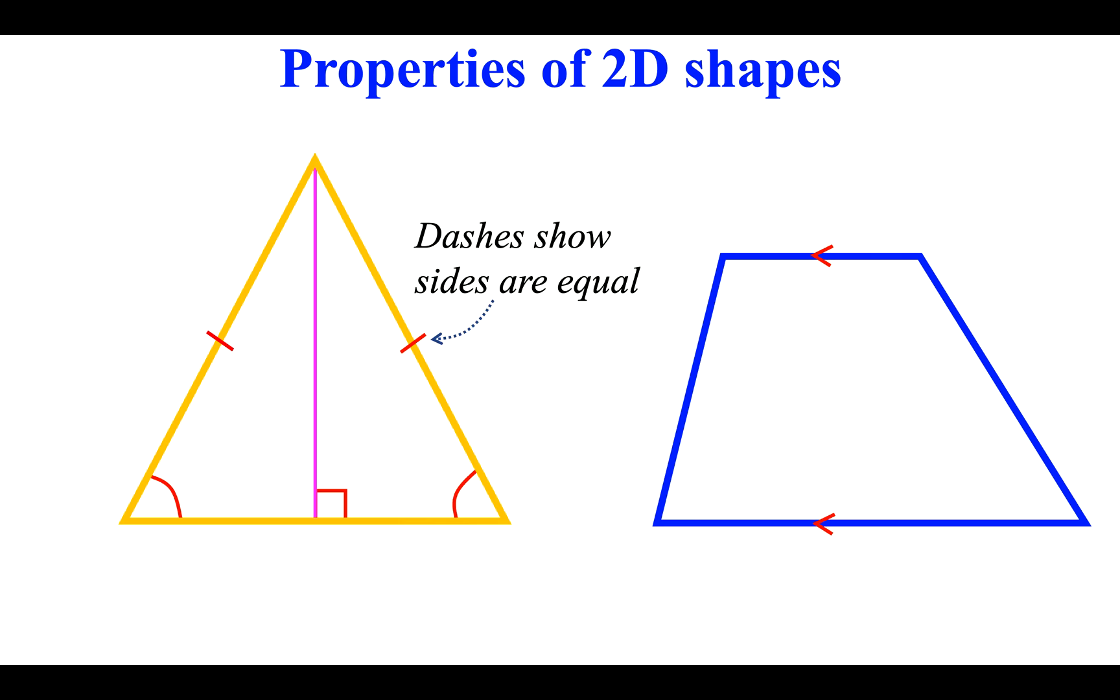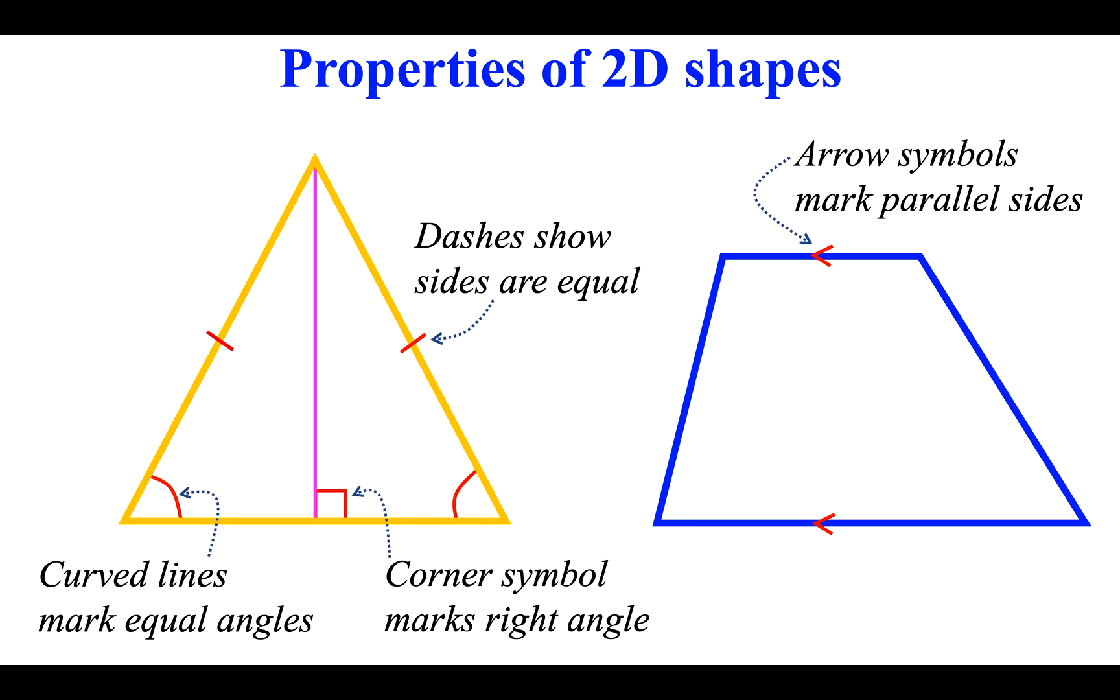Dashes show sides are equal. Corner symbol marks right angle. Curved lines mark equal angles. Arrow symbols mark parallel sides.